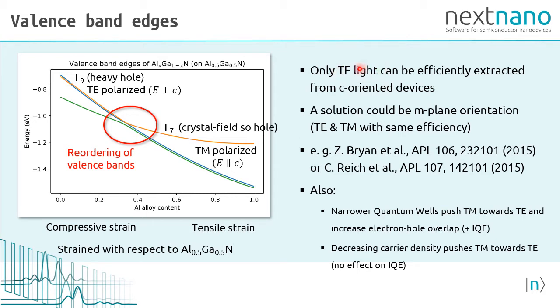As already said, only TE light can be efficiently extracted from C-oriented devices. So TM-polarized photons are useless.